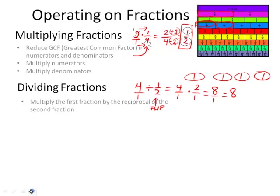You're going to multiply the first fraction by the reciprocal, or the flip, of the second fraction. Then you just follow as you did with multiplying fractions.